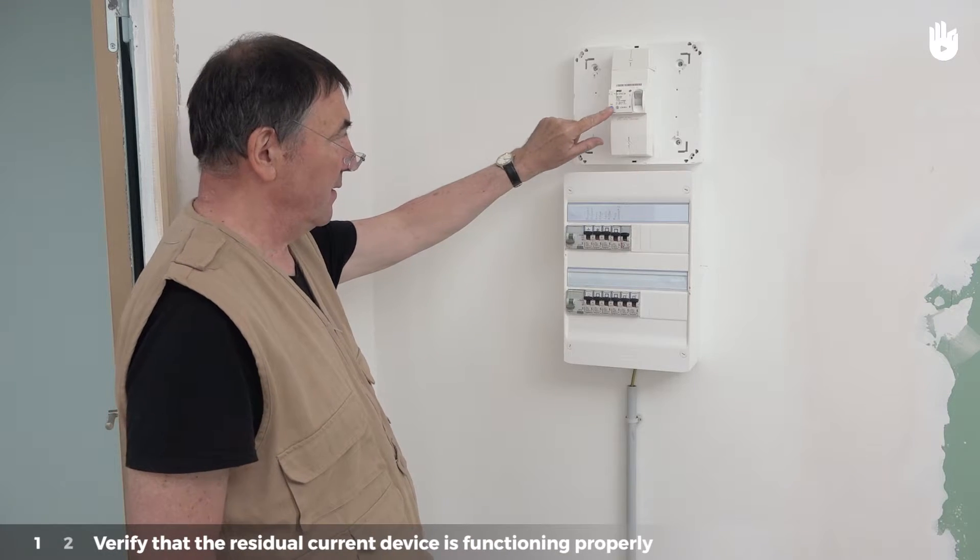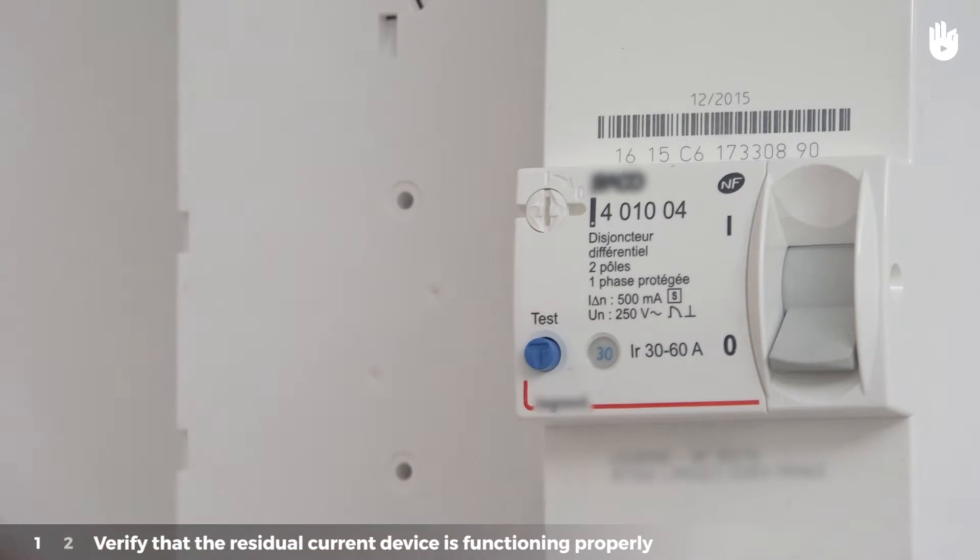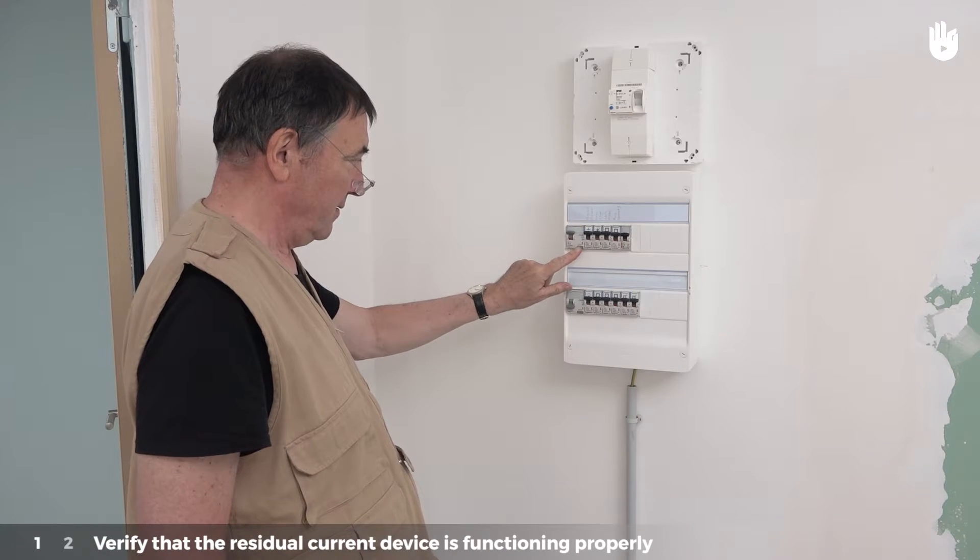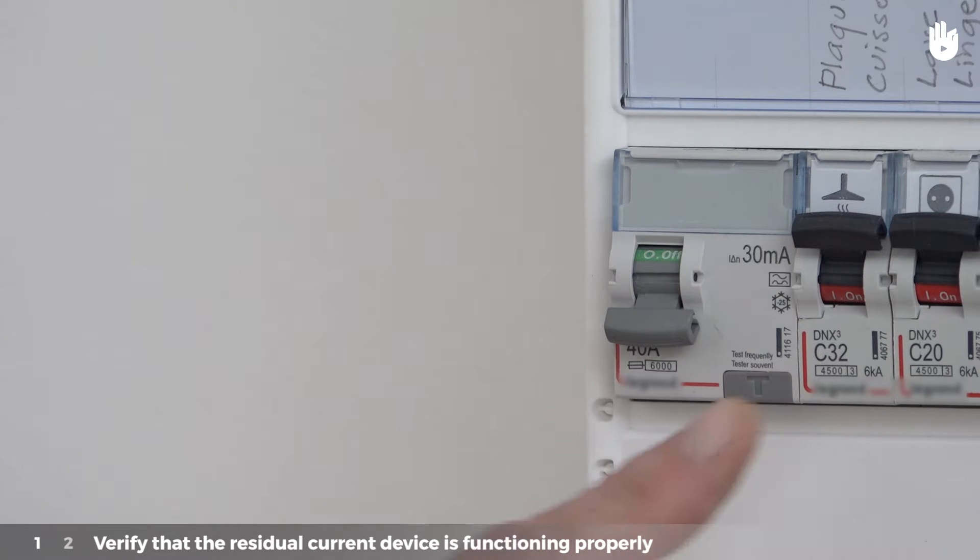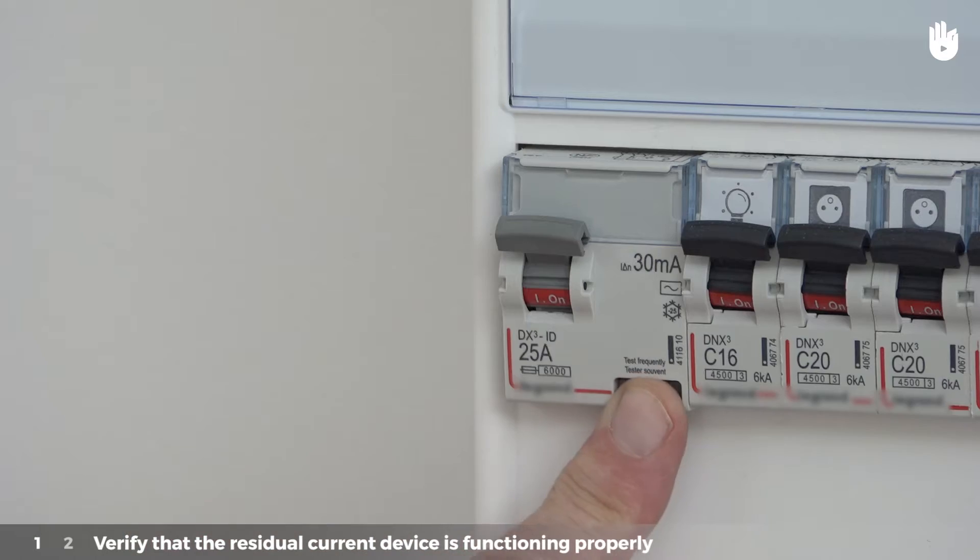A test of the protection system should be carried out frequently by the user by using the test button located on the main circuit breaker and the residual current circuit breaker at the beginning of the row. Over time, mechanical protection systems are subject to wear and tear and may no longer function properly.